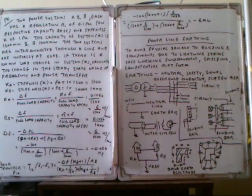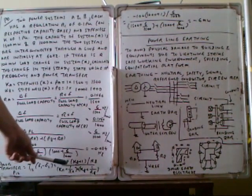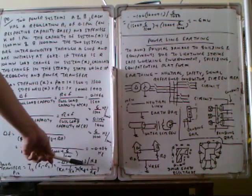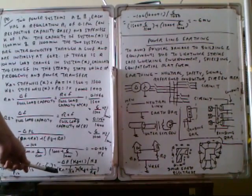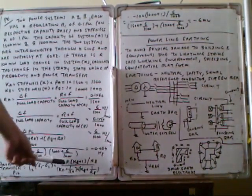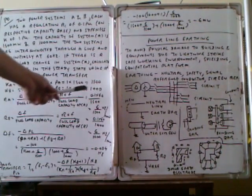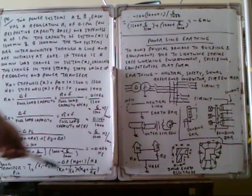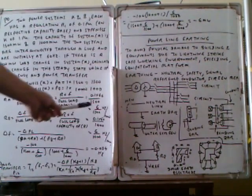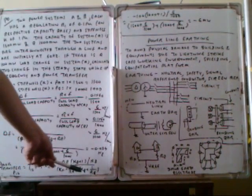The power transfer from 1 to 2 is T_12 into delta 1 minus delta 2. So negative delta P_A times K_B plus 1 divided by R_B, divided by K_A plus 1 by R_A plus K_B plus 1 by R_B. Delta P_A is 100, K_B is 1000, and R_B is 6 by 1000.